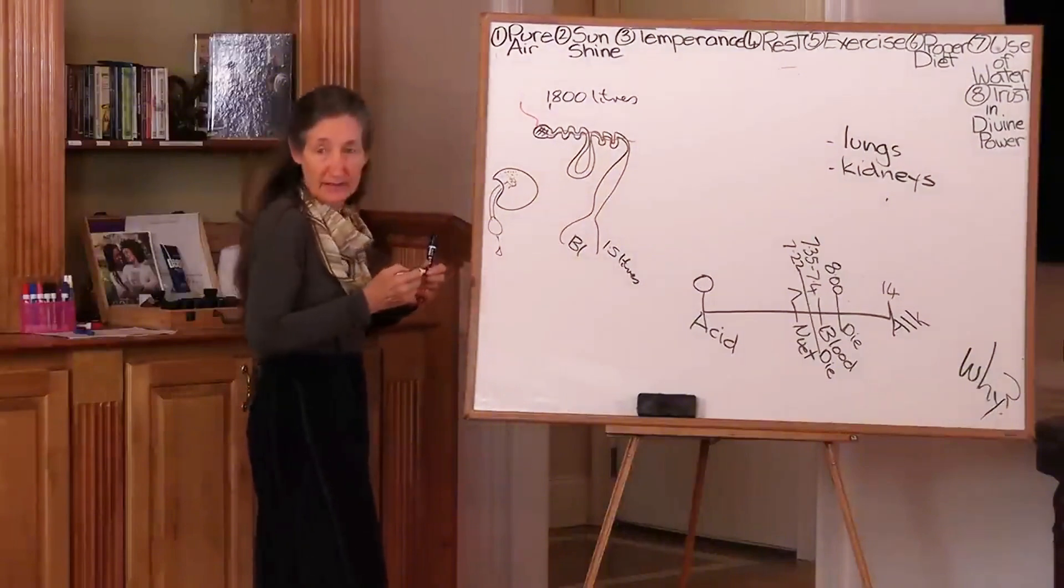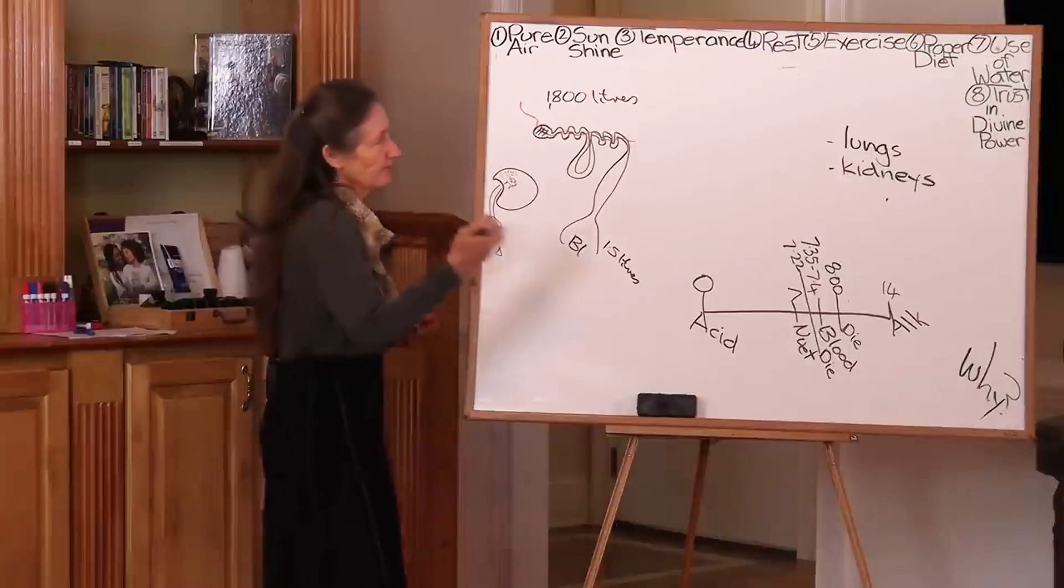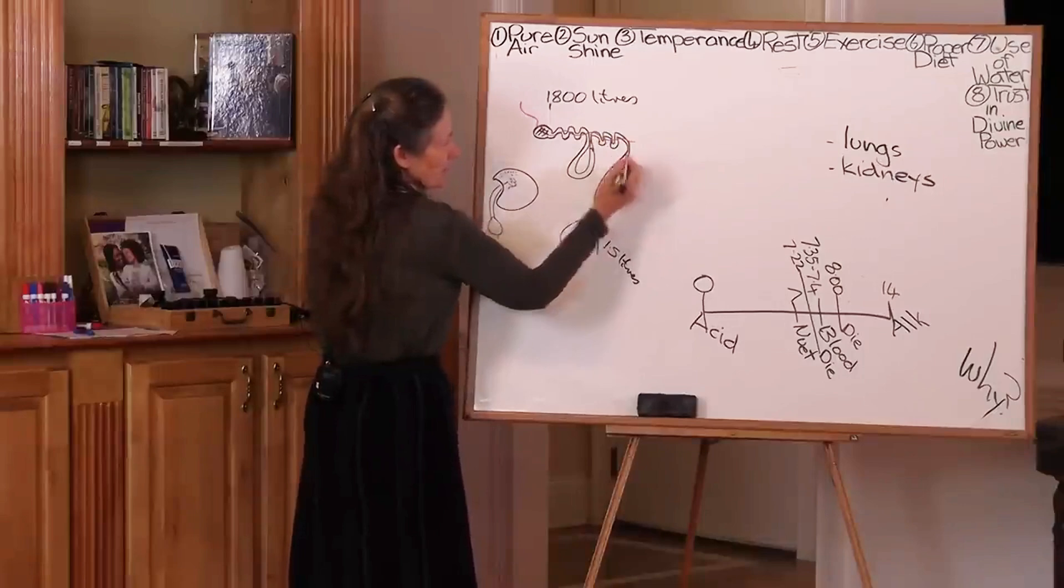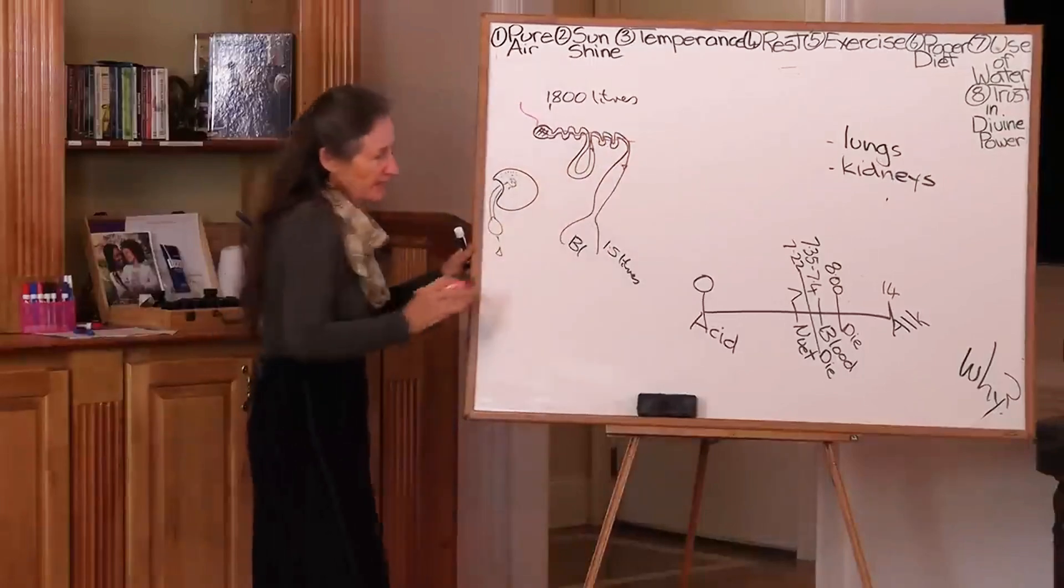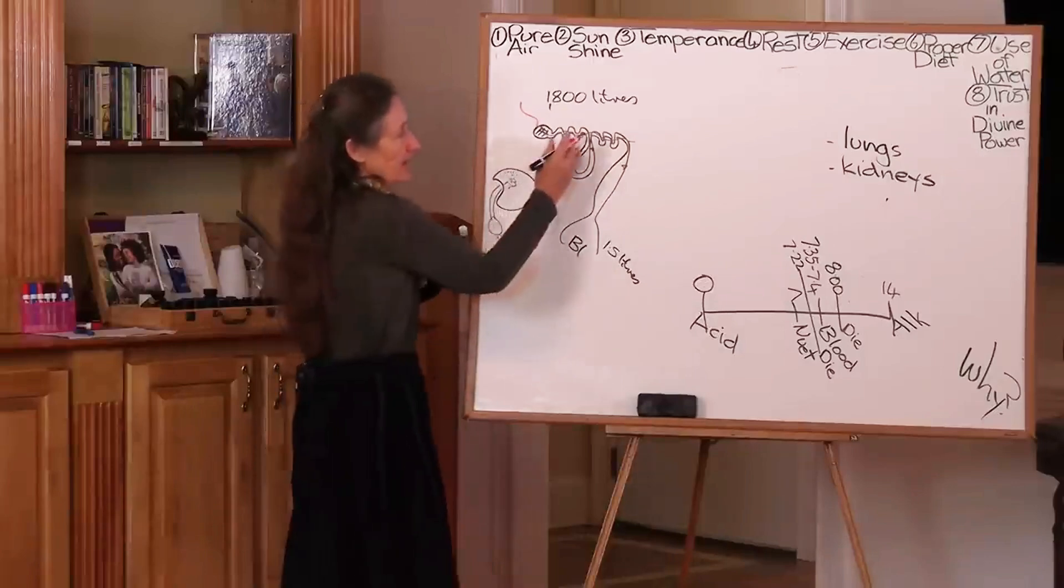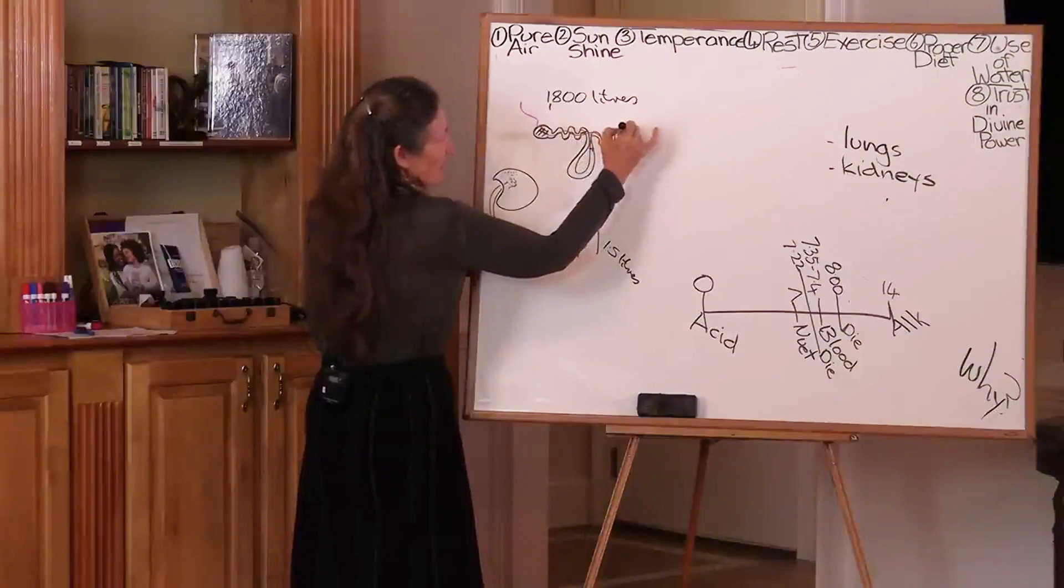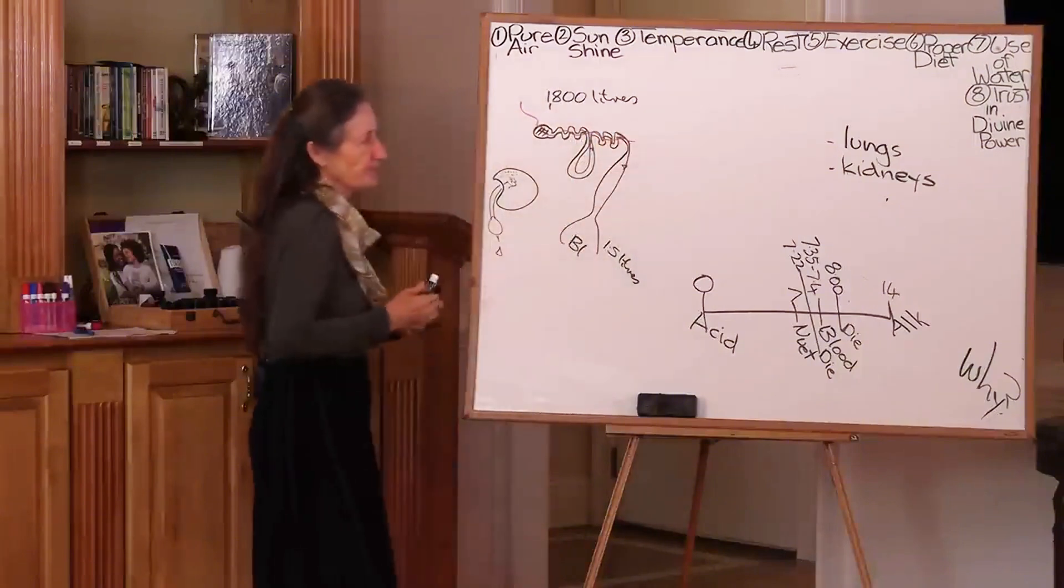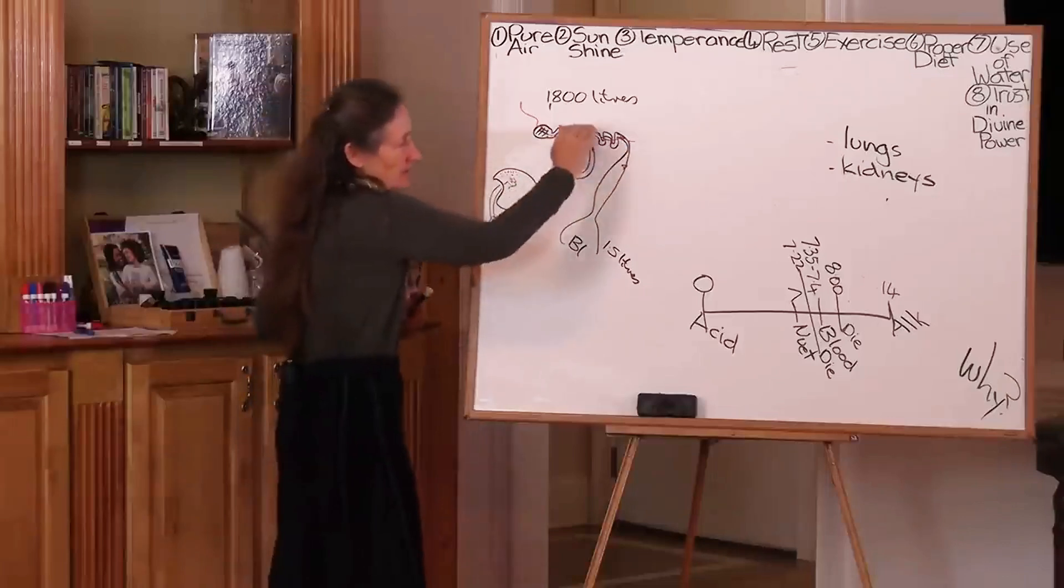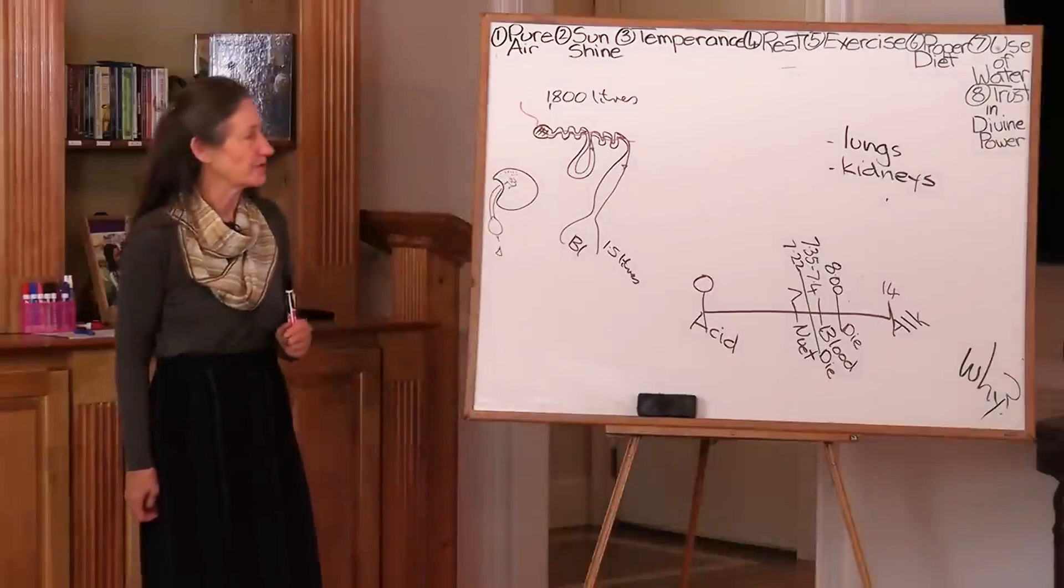So let's say the pH of the blood is getting too acid. Then extra acid is dropped into the tubules to be urinated out. But let's say the pH of the blood is going too alkaline. Well, it is here that extra acid is pulled back out of the tubules and into the blood. So that is how the kidneys are constantly monitoring and balancing, if necessary, the pH of the blood.